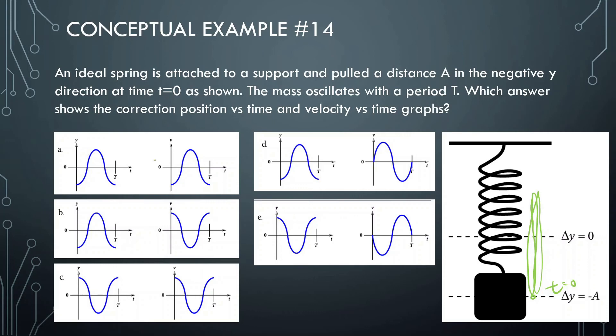So we have position versus time and velocity versus time for every situation. Let's just first look at the position versus time. So we know it starts at negative a. What that means is a is a possibility, b is a possibility, and d is a possibility. C and e is not a possibility because c starts at positive a, and e also starts at positive a. A, b, and d all start at negative a. So that's good.